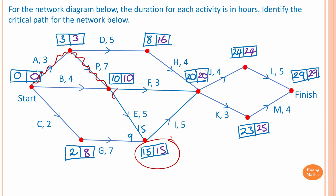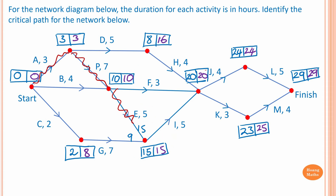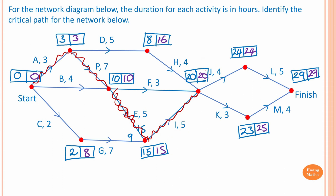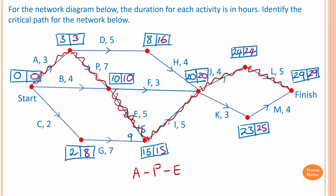This must be the critical path because fifteen minus five is ten, so activity E is critical. Activity I is critical because twenty minus five is fifteen. Activity L is also critical because the float time is zero at twenty-four. Therefore the critical path for this network is A, P, E, I, J, and L.